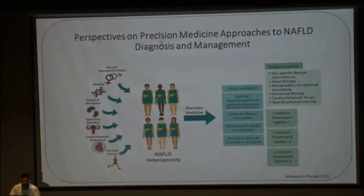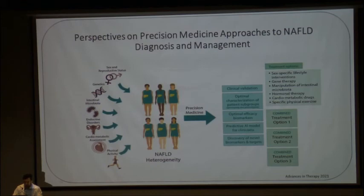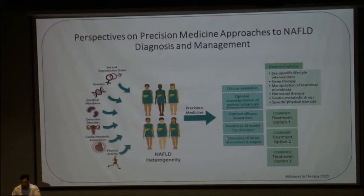NAFLD is a multi-modality approach which includes genetics, intestinal microbiota, sex and reproductive status, endocrine disorders, assessment of cardiometabolic activity, and physical activity, leading to multiple heterogeneity in NASH. There is a need for development of precision medicine based on genetics to individualize and tailor treatment on the basis of genetic score and individual patient profile.